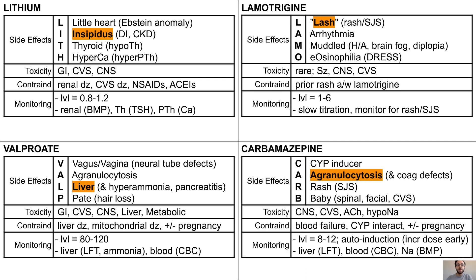Finally, carbamazepine side effects include being a strong CYP inducer, agranulocytosis and coagulation defects, risk of rash and Stevens-Johnson syndrome, and teratogenic potential for spinal, facial, and cardiovascular abnormalities, which you can remember by 'baby.' Carbamazepine has a narrow therapeutic index of 8 to 12, with the added complication that it is auto-inducing, which means it reduces its own serum level by inducing CYP enzymes. Therefore, it often requires dose increases and frequent monitoring of levels early on, with potential for toxicity involving the organ systems listed here and requires monitoring with LFTs, CBCs, and BMPs for sodium.